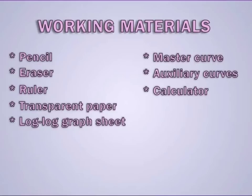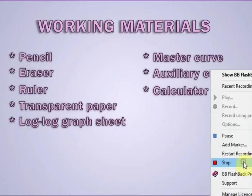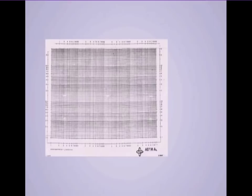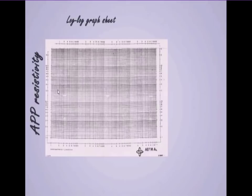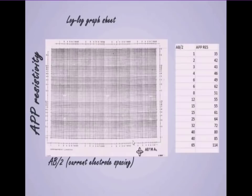Once you have all these, you are set to go along with this tutorial course. Place your log log graph sheet on the table. And before you continue, I would like to tell you that the vertical axis for your log log sheet stands for the apparent resistivity. While the horizontal axis serves as the current electrode spacing, which is AB over 2.